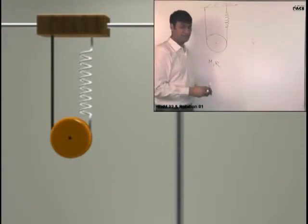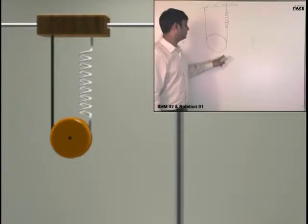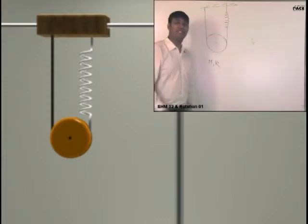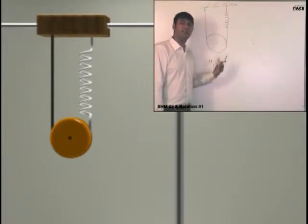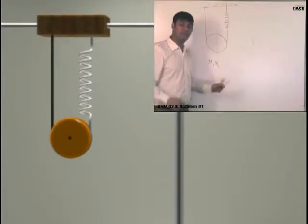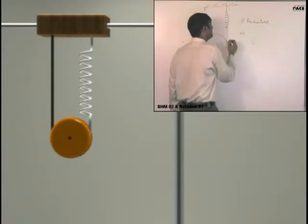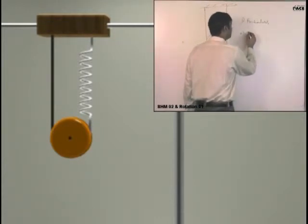This is a disk of mass M radius R. This disk is like a pulley which has a thread. The thread is having two cases. In one case there is no friction between the pulley and the thread. First case is frictionless and second case is there is no slipping between the thread and pulley. So there is friction.